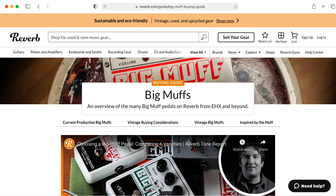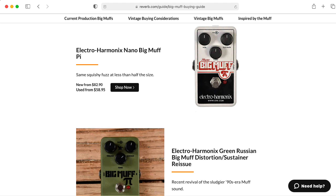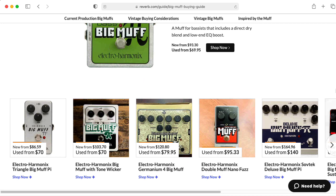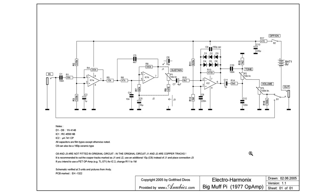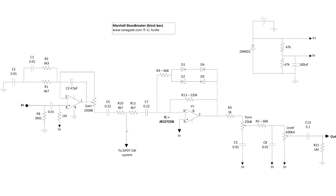I'd like to wrap up this discussion of fuzz by talking about something that's a little bit confusing — that's the Big Muff pedal. There are actually two different versions of the Big Muff: one that uses four transistors and one that uses an op amp. These are generally classified as fuzzes, but when you look at the actual topology these have more in common with the overdrive pedals we looked at. The op amp version, with a schematic created by Gottfried Divas, consists of an operational amplifier in a non-inverting configuration with back-to-back diodes in the feedback loop. This topology has more in common with the Marshall Blues Breaker overdrive pedal we looked at in a previous lecture than any of the transistor-based fuzzes.